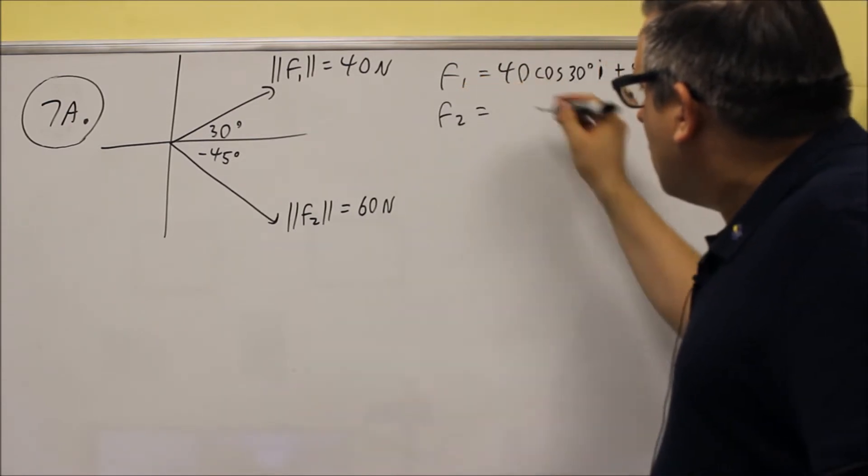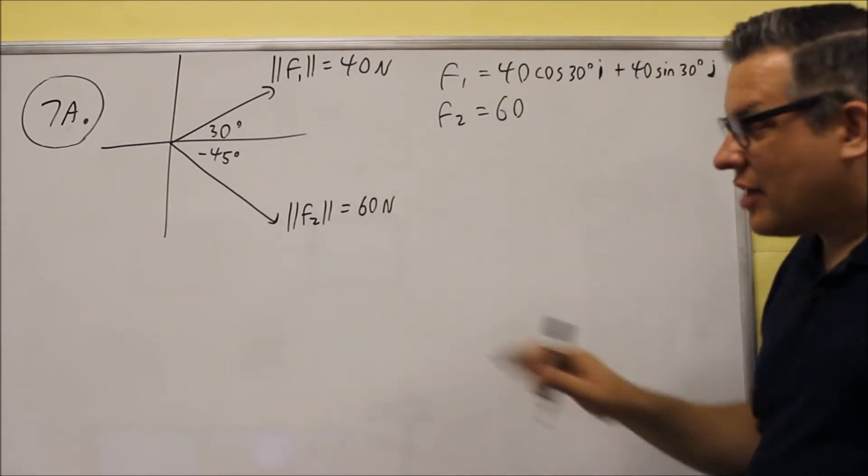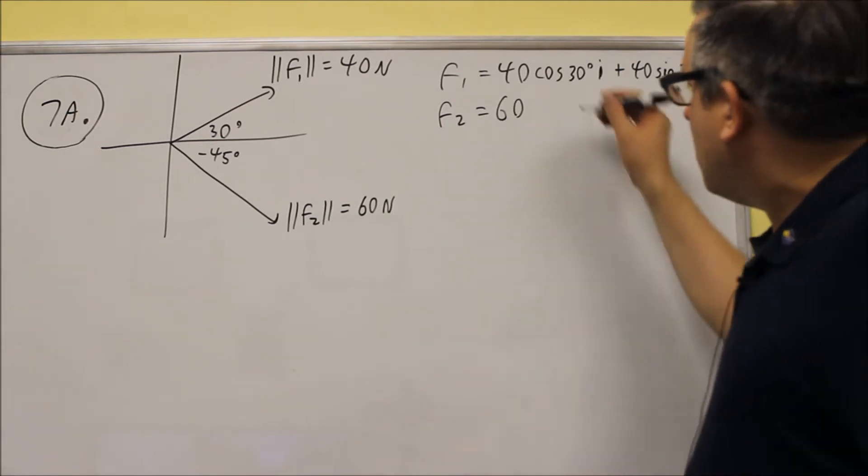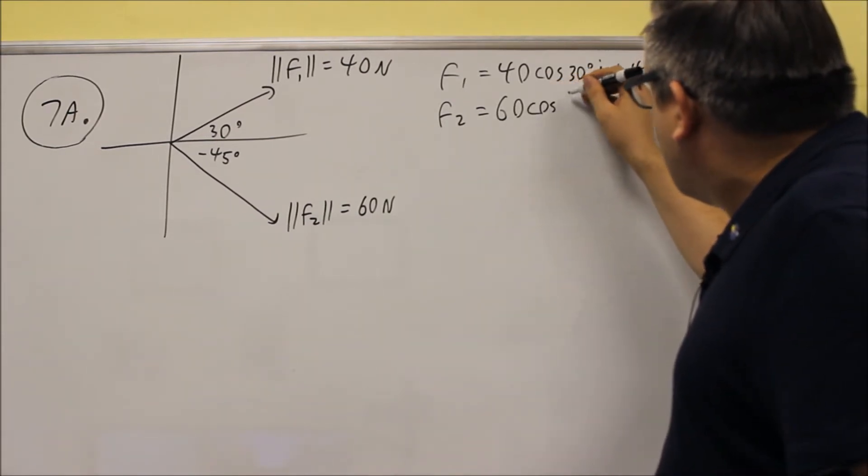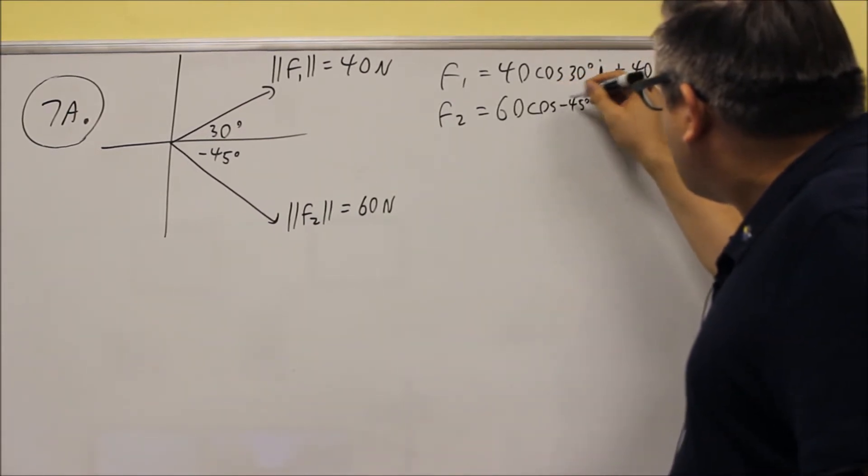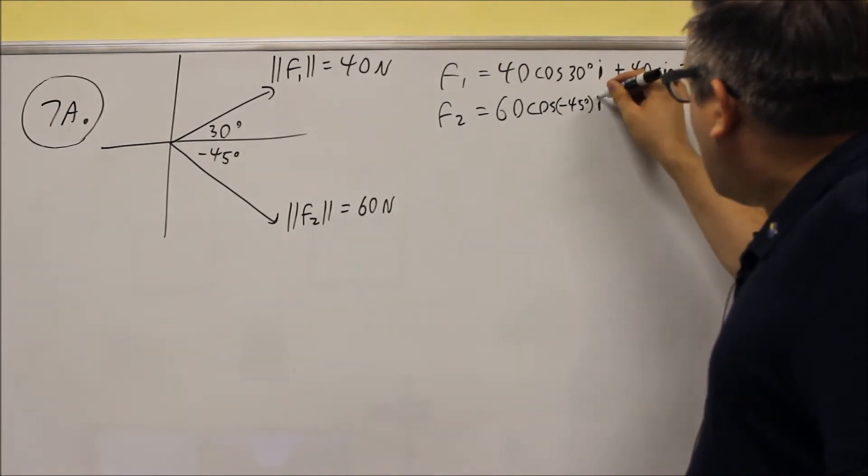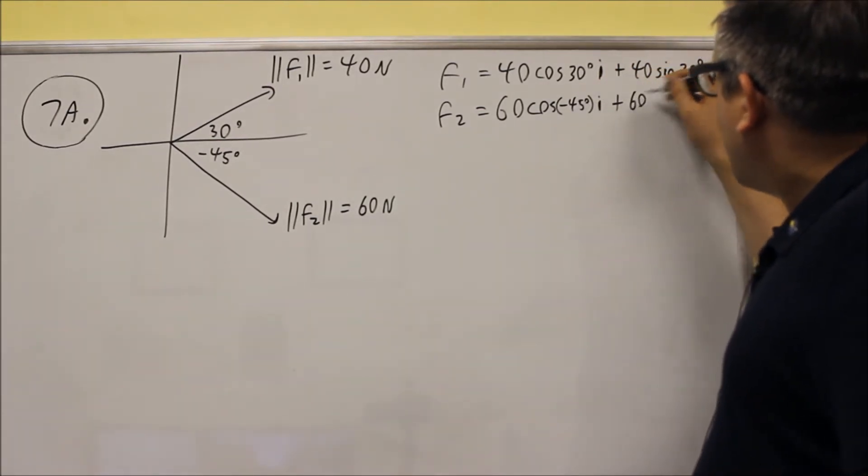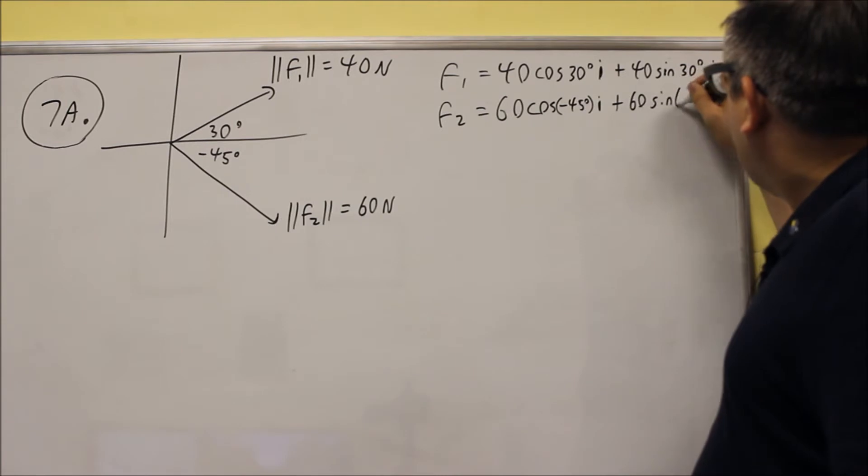We're going to do the same thing for F2. That force is 60. That's the magnitude of that one. You're going to do 60 cosine negative 45, I plus 60 sine negative 45. Don't forget that negative. Very important. And that's going to be J.